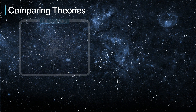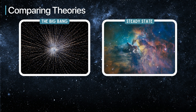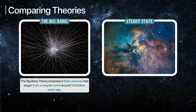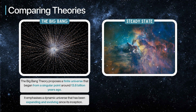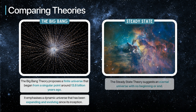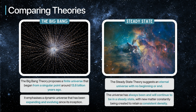The primary difference between the Big Bang Theory and the steady-state theory lies in their understanding of the universe's history and structure. The Big Bang Theory proposes a finite universe that began from a singular point around 13.8 billion years ago, emphasising a dynamic universe that has been expanding and evolving since its inception. On the other hand, the steady-state theory suggests an eternal universe with no beginning or end, maintaining that the universe has always been and will continue to be in a steady state, with new matter constantly being created to retain a consistent density. Current evidence leans strongly in favour of the Big Bang Theory, but both theories have played crucial roles in shaping our understanding of the cosmos.